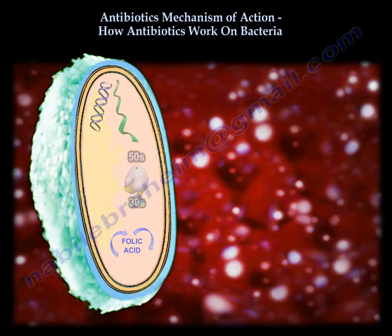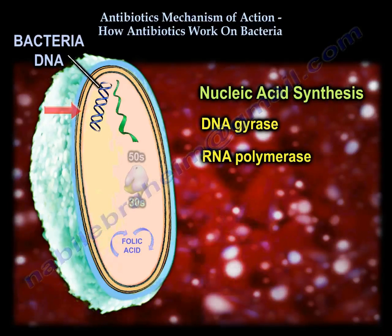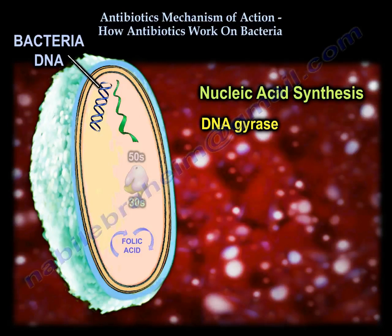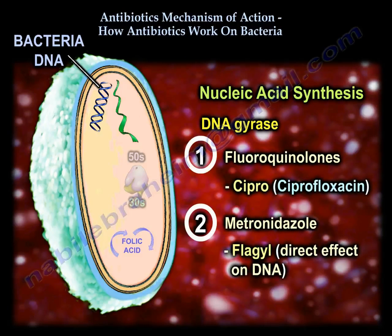Let's take number four. Some antibiotics will work on nucleic acid synthesis — that can be the DNA gyrase or the RNA polymerase. Two important drugs work on the DNA gyrase: number one, Cipro; number two, Metro, which is Flagyl.